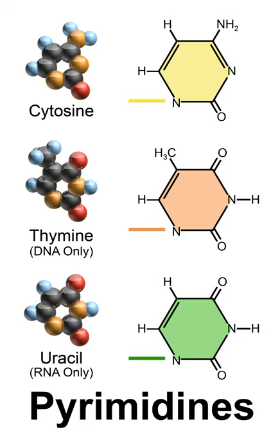Pyrimidine is an aromatic heterocyclic organic compound similar to pyridine. One of the three diazines, six-membered heterocyclics with two nitrogen atoms in the ring, it has the nitrogen atoms at positions 1 and 3 in the ring. The other diazines are pyrazine and pyridazine.